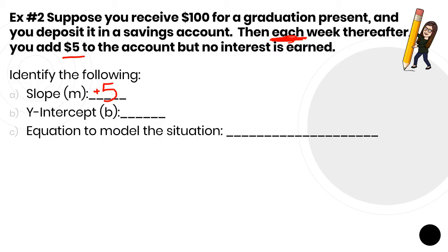The y-intercept. Y-intercept is your original amount. Well, from day one you had $100. And that's a positive $100. You're starting with more money than what you originally had.